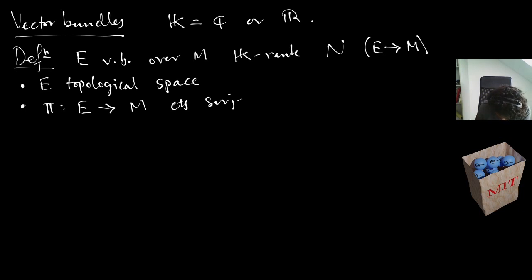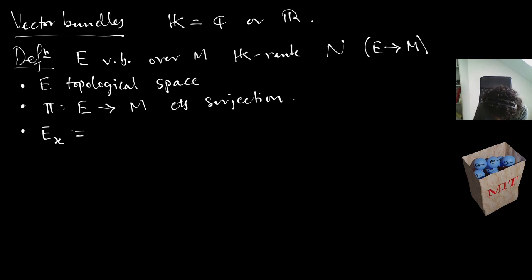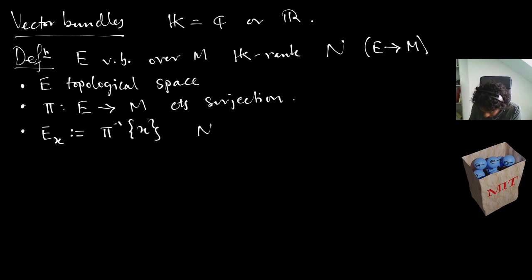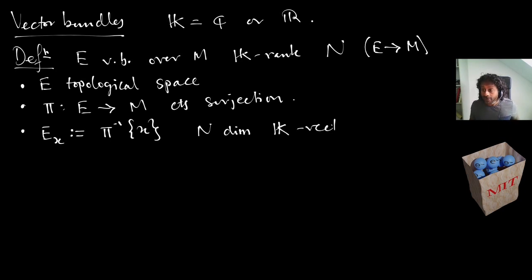What gives it a vector structure is if we define E_x to be the fiber, i.e., the preimage of a point under π. This is an N-dimensional K-vector space. Note that this capital N need not be — and almost always will not be — the same as the dimension of the manifold.